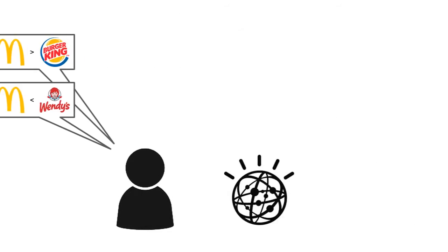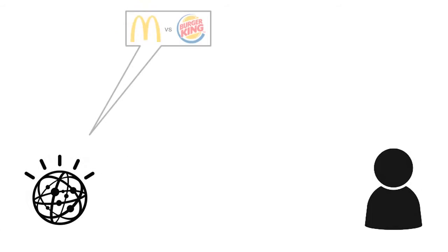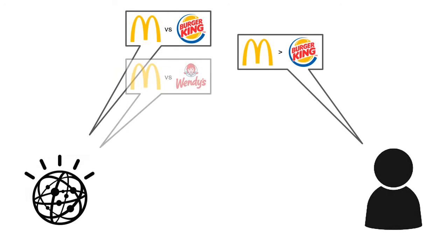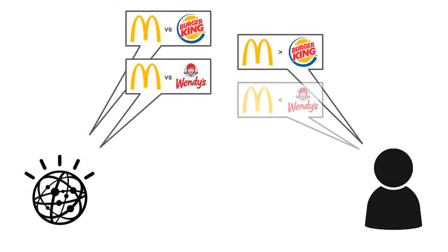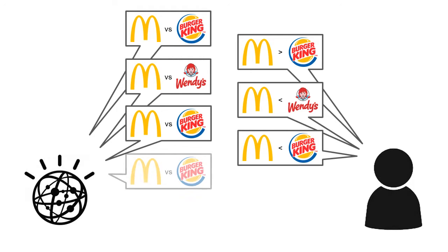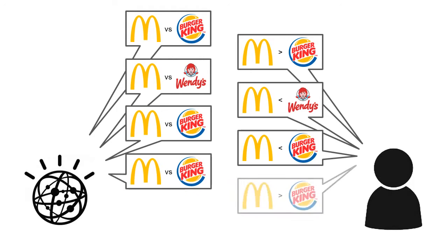Problem is, what if people's preferences are non-deterministic? That is, your preference today may be different from that of yesterday. Even if you're sure that you like McDonald's more than Burger King, it doesn't mean you will go to McDonald's every time you have a choice between the two — it's just you'll go to McDonald's more often.